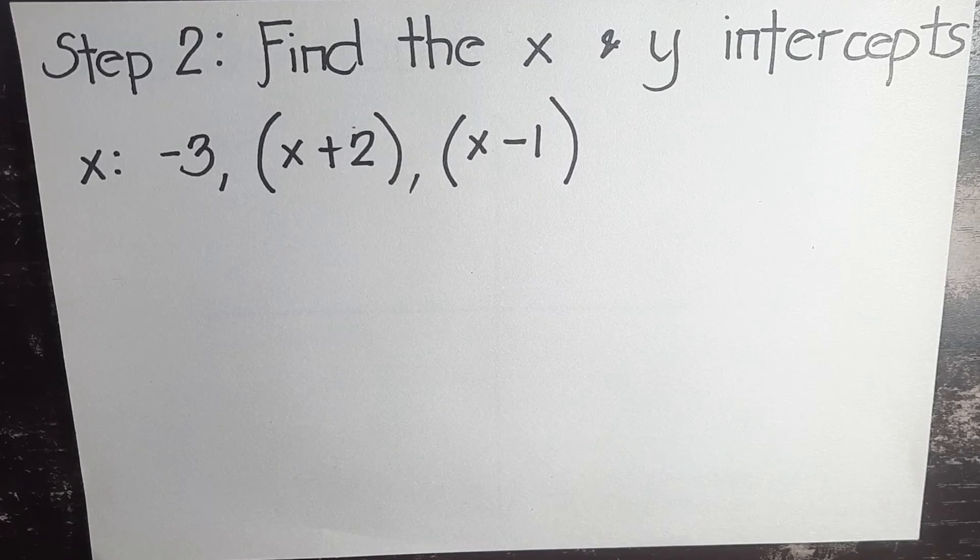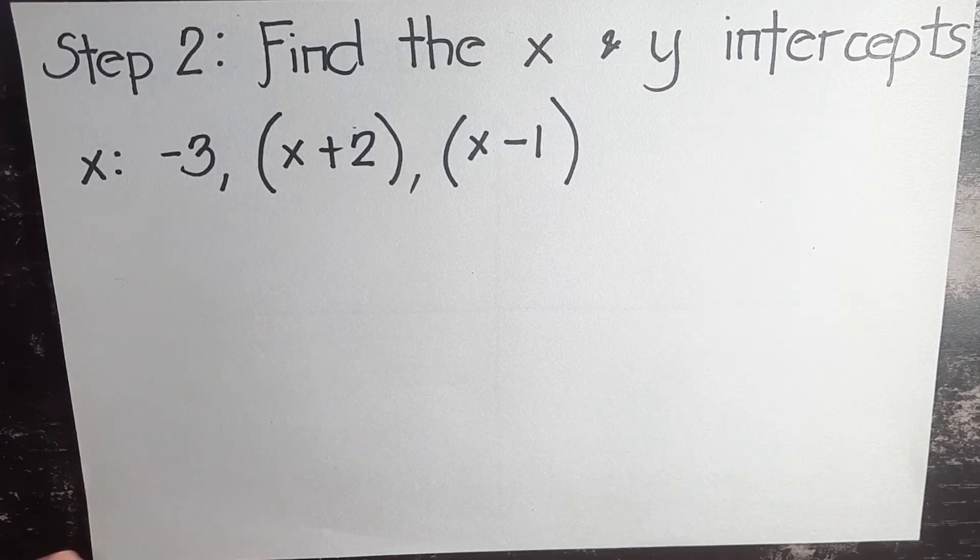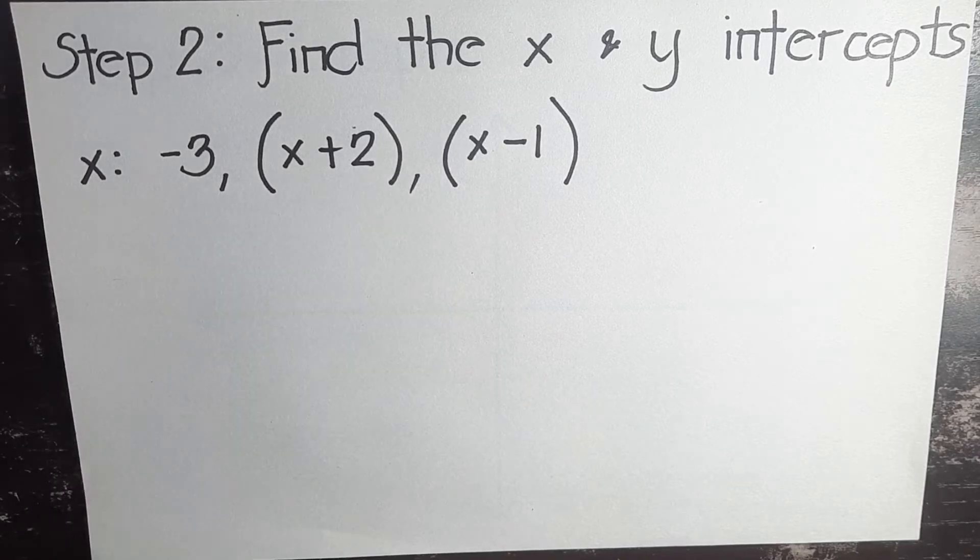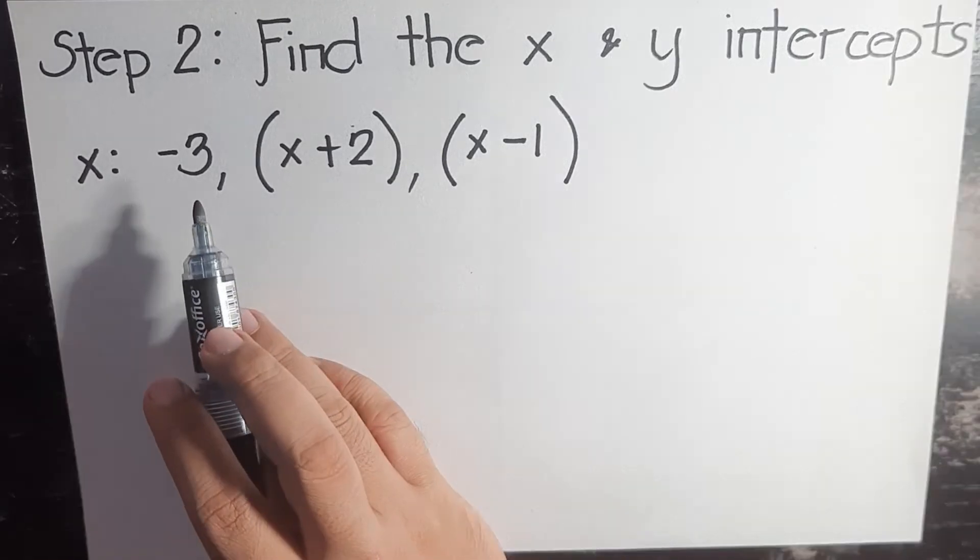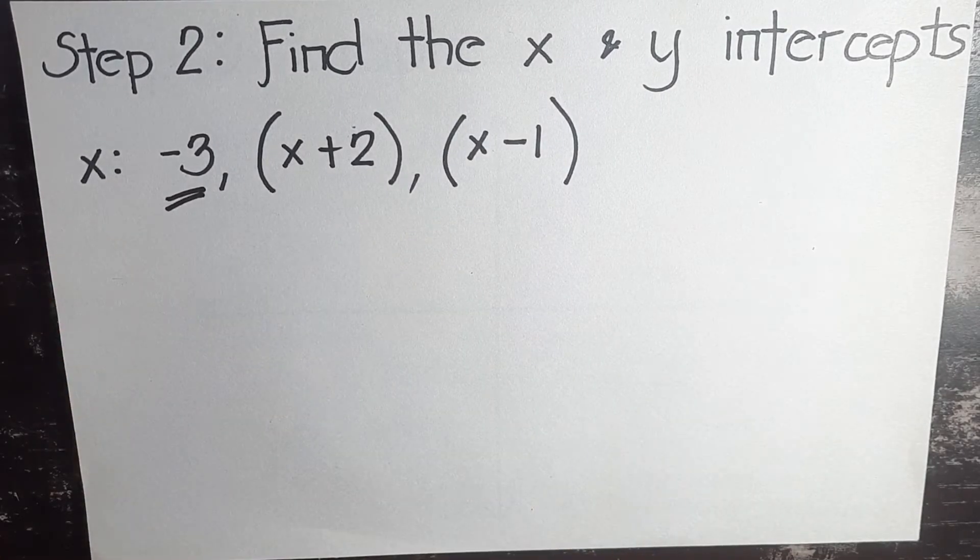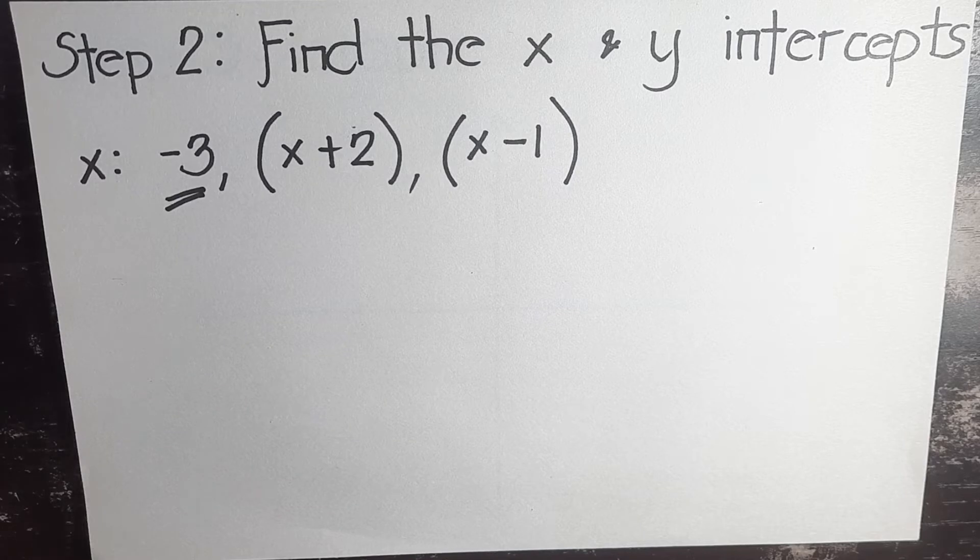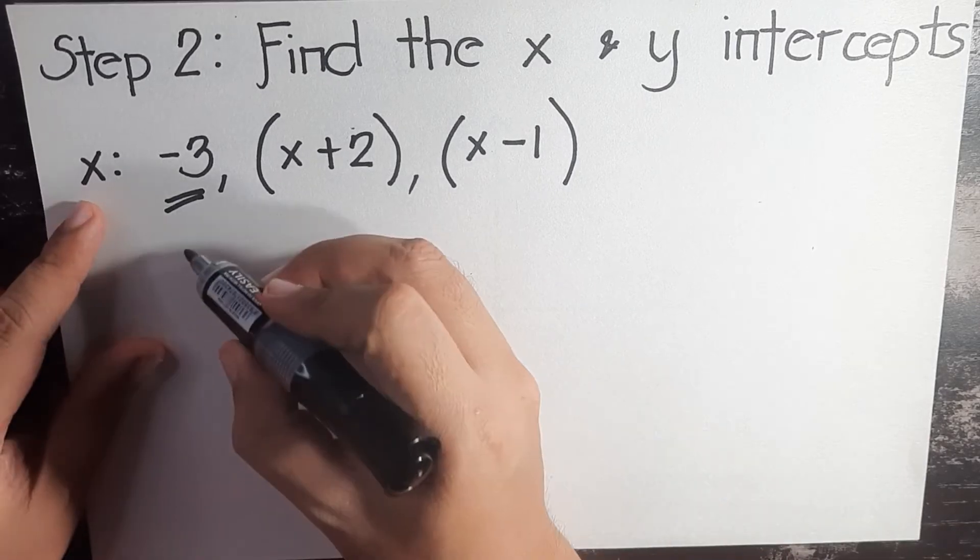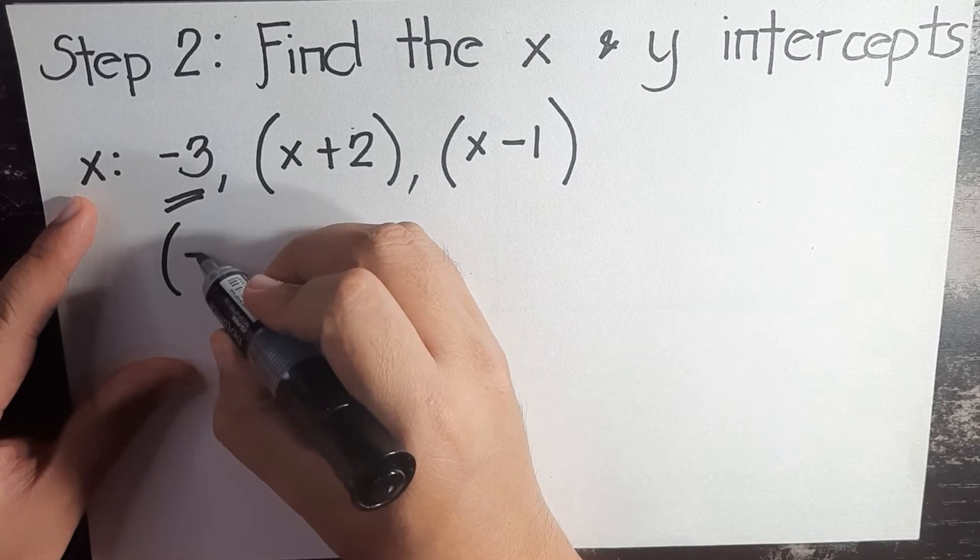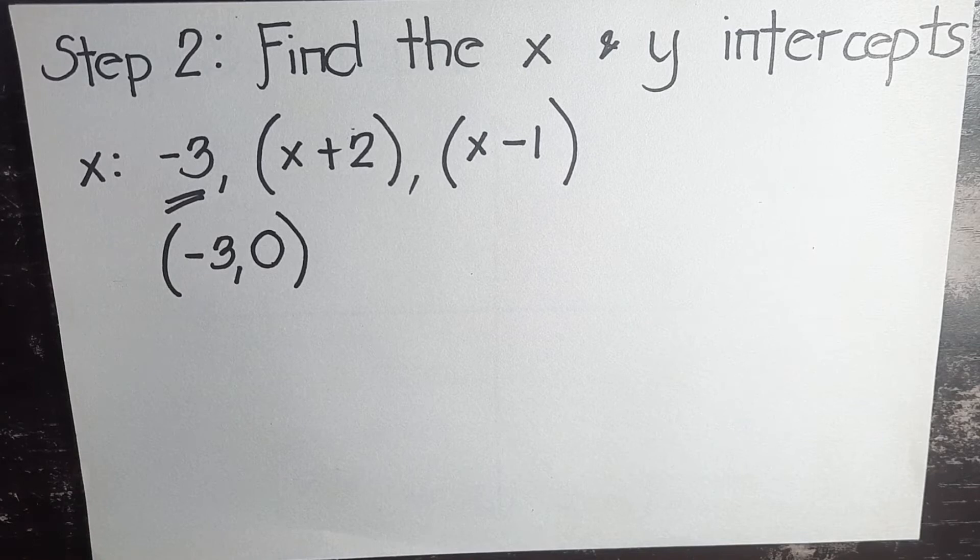This is our step two: find the x and y intercepts. Based on the three factors that we got earlier, negative three here is already the root of the polynomial. X + 2 and x - 1 are the factors. Since we already have negative three, this is our first x-intercept. We'll convert it into coordinate form so that we can use that to graph in the Cartesian plane. Since this is the value of x, we have (-3, 0).